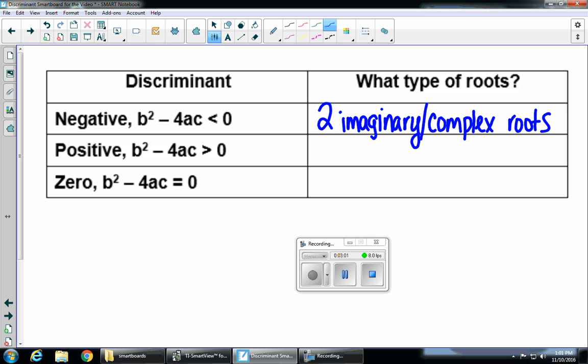And remember, roots is the same thing as solutions. So that's if it's negative. If you find the discriminant and the discriminant is positive, it means that you will have two real roots.